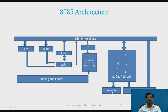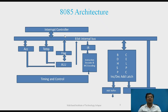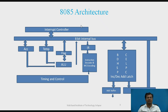There is an address buffer and address/data buffer in which the address and data are stored and subsequently forwarded. There is an interrupt controller circuit which controls the five main hardware interrupts: RST 7.5, RST 6.5, RST 5.5, INTR, and TRAP. For INTR, it gives the acknowledgement as INTA bar.